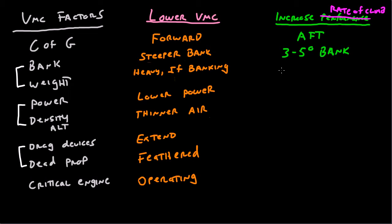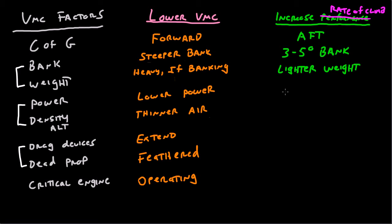Let's start out with weight. In order to increase aircraft performance on a single engine, you want a lighter weight. That one shouldn't take too much explanation. If you're banking, you want the airplane to be heavy in order to lower VMC. If all you care about is climbing, you want the airplane to be as light as possible. The reason for that is, for the same amount of lift, the less weight you have, the more excess lift you'll have, and therefore the better you'll be able to climb. That one doesn't even really need a picture.